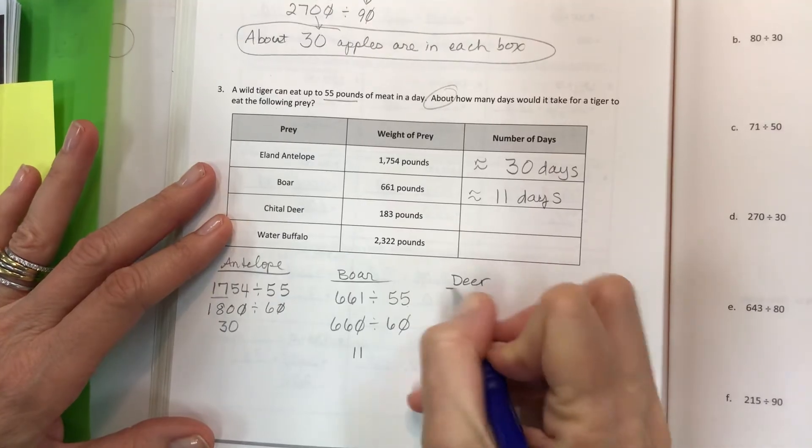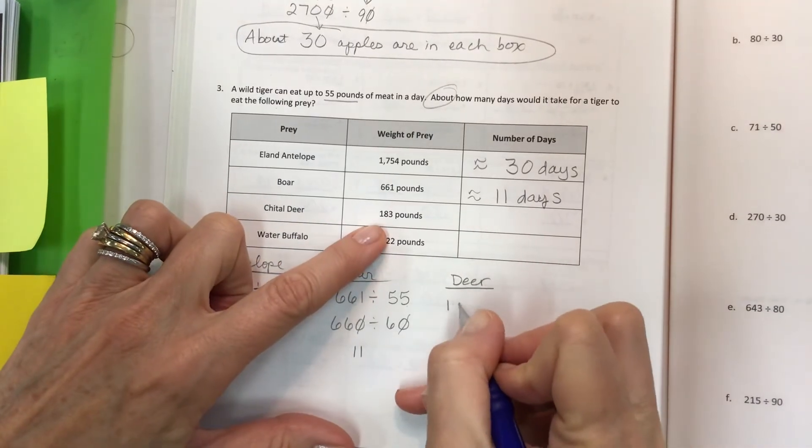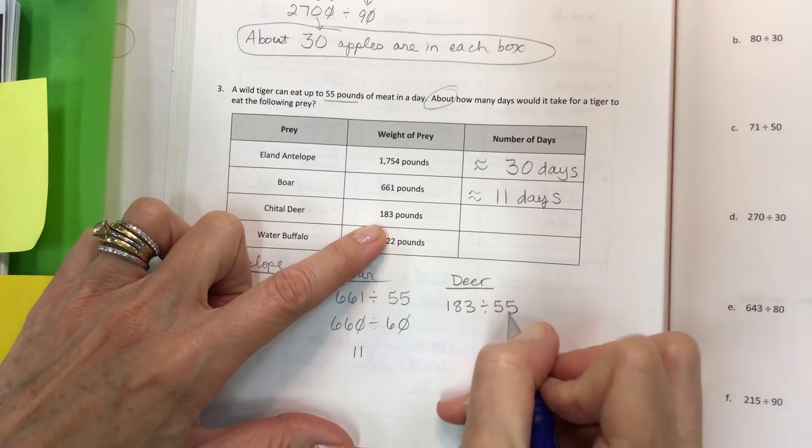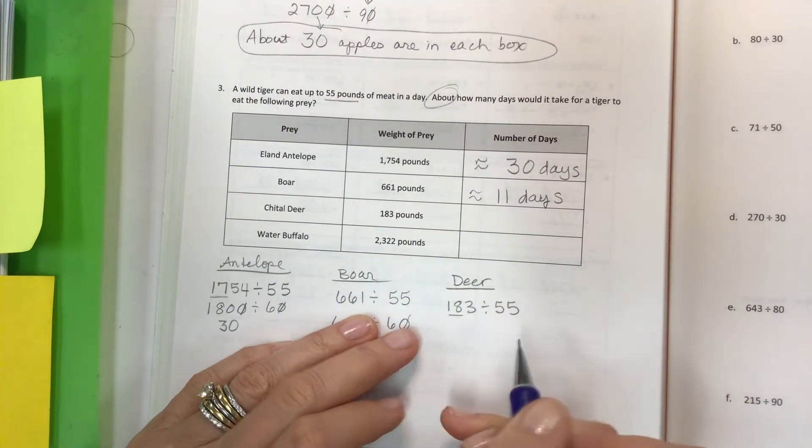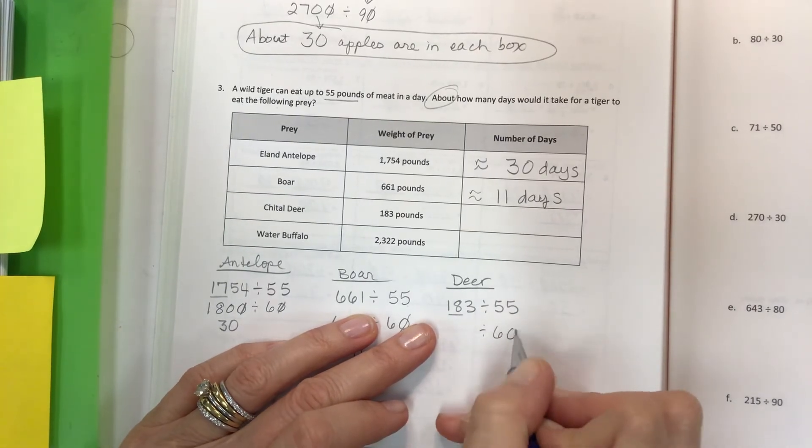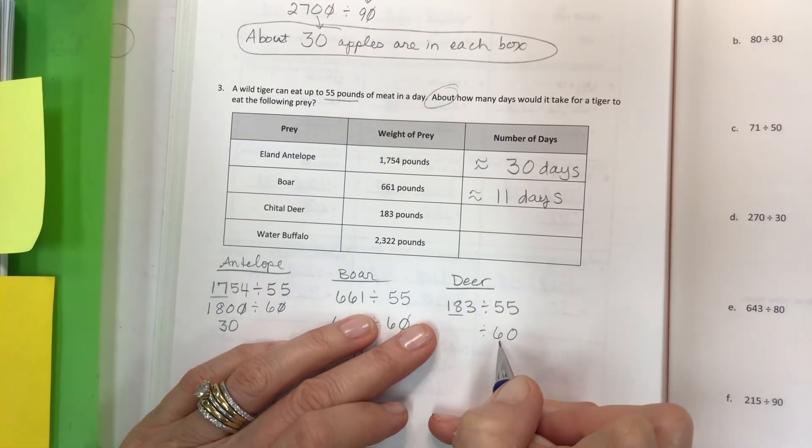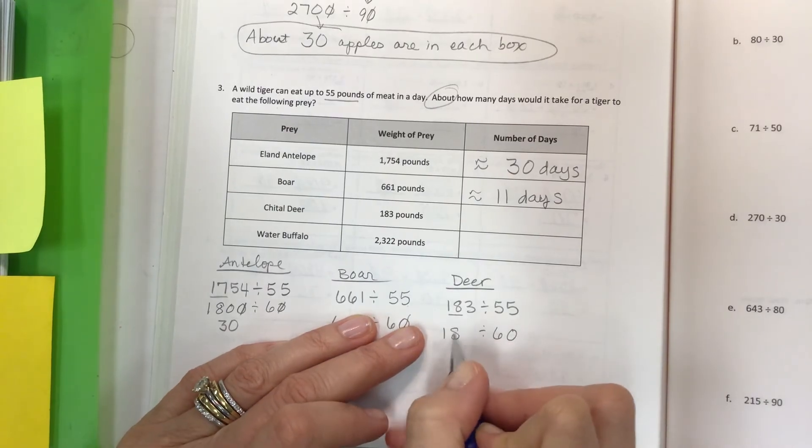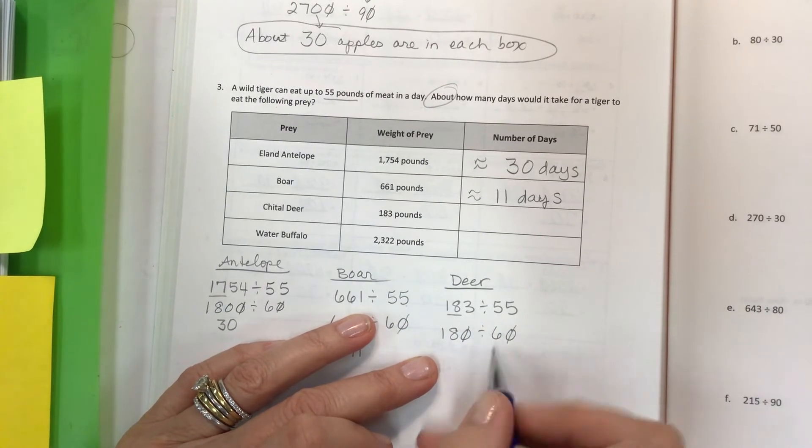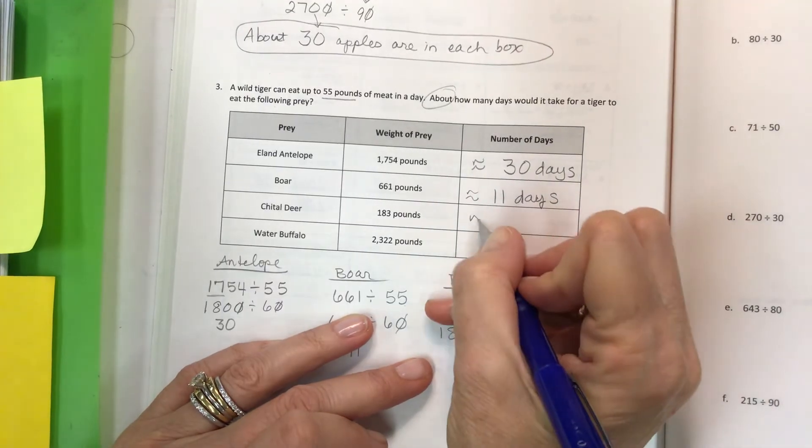Deer - 183 pounds, they're getting smaller. Divided by 55 again. I've got this multiple of 6 right here, so I'm going to use what works for me. I'm going to round this to 60 and then change this to 180. Offset my zeros, divide 18 by 6 to get 3.